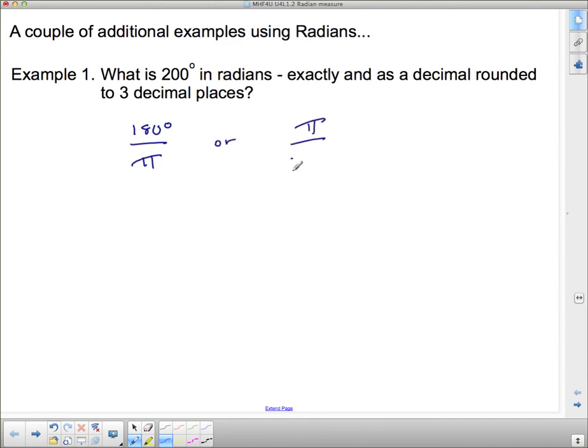Or pi is 180 degrees. Those two things are exactly the same, and you can use either one. Now since we're trying to find radians, it's actually better to use the one where radians is on top. It makes it just a little bit easier to simplify if you've got radians on top of your fraction.